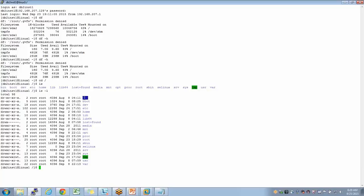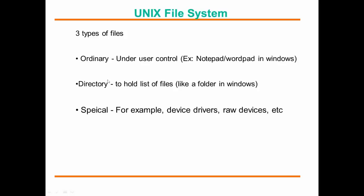The first column is important. In a Unix file system, there are three types of files: ordinary files, directory files, and special files. An ordinary file is like a Notepad or WordPad in Windows. A directory is like a folder — it holds a list of ordinary files or other directories.